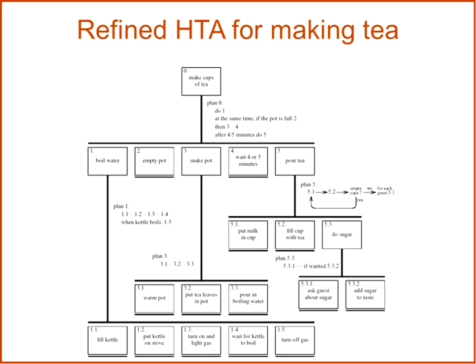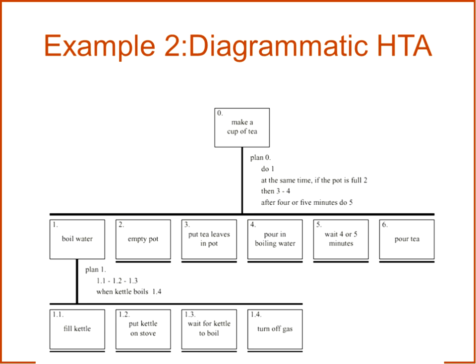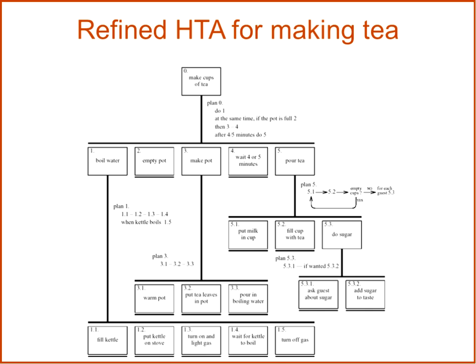After applying heuristics, you improve the initial task analysis: you introduce a new task 'make a pot' and put subtasks under it. Also, 'pour tea' can be generalized — maybe there are more than one cup, so until the pot is empty you can make a cup of tea, putting milk in the cup, filling the cup with tea, and adding sugar.